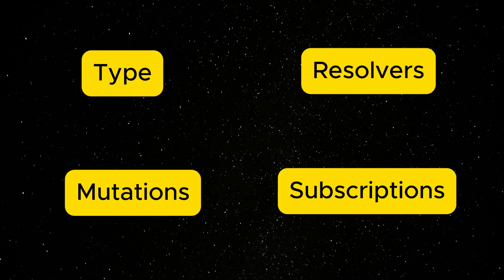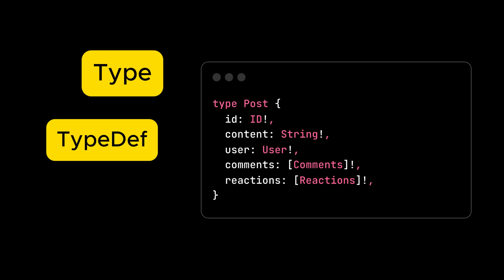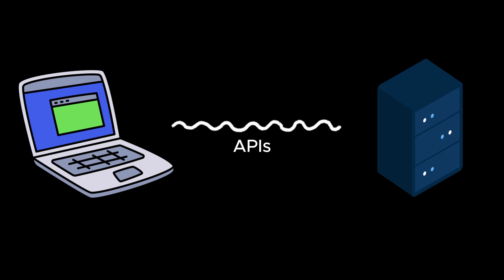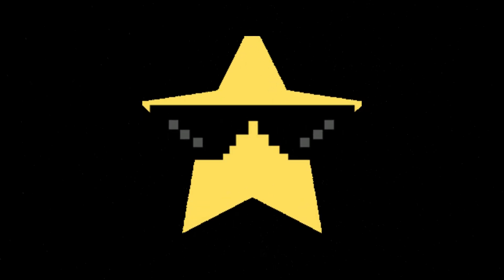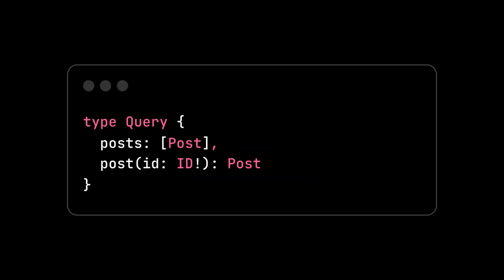GraphQL is built around four key components: types, resolvers, mutations, and subscriptions. A type definition — often written as type or typedef — is like creating a blueprint for what kind of data a particular object will have. It's how you define what your API can return or accept. This way, the client making an API call knows exactly what to expect — no surprises, no guessing games. Query is your entry point. It defines what data you can get, how you can ask for it, and makes sure you follow the rules.